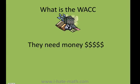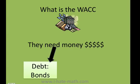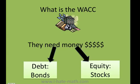What is the WACC? When a company needs money, they can do it by either issuing bonds or by giving out stocks. The bonds are related to debt and the stocks are related to equity — that is the difference between debt and equity.